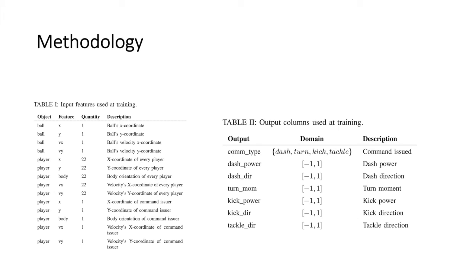This means that every frame in the match generated 10 data points for the 10 field players of Helios. A single neural network operating on these data points learns to imitate any player, instead of having 10 neural networks, one for every player.